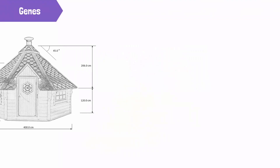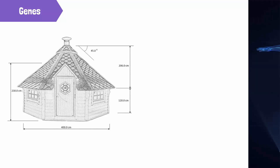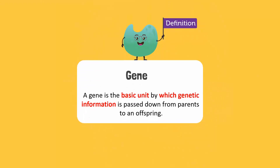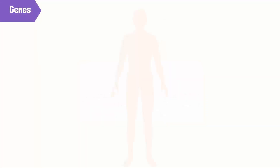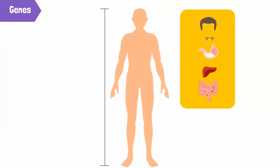Just like the plan or blueprint of your hut consists of lines drawn on a piece of paper, the blueprint for building a living organism consists of molecules called genes. A gene is the basic unit by which genetic information is passed down generations, from parents to an offspring. For example, every hereditary characteristic in an organism, such as height, eye color, even the shape of an earlobe, is controlled by genes.